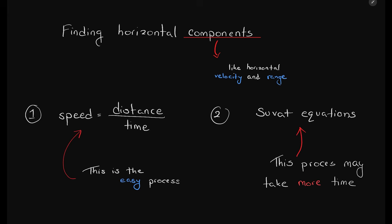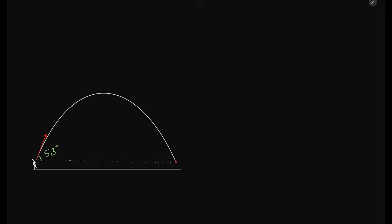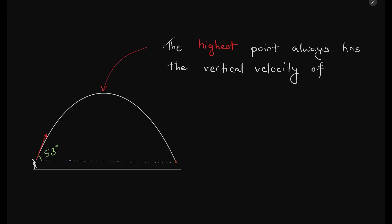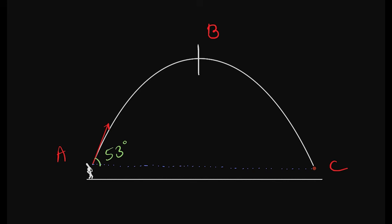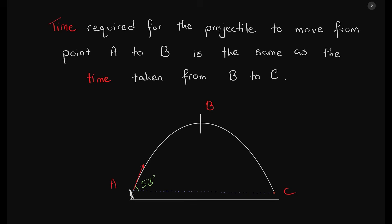We can use two approaches: the normal speed = distance / time formula, or the SUVAT formula to find time and then use it in the horizontal formula. Using vertical components to find time — since the ball rises up and falls to the same level, the time from A to B equals the time from B to C. At the highest point, vertical velocity is always zero. Using v = u + at with upward acceleration as negative 9.81, we get time equals 3.01 seconds from A to B. So the total time of flight is 6.02 seconds.